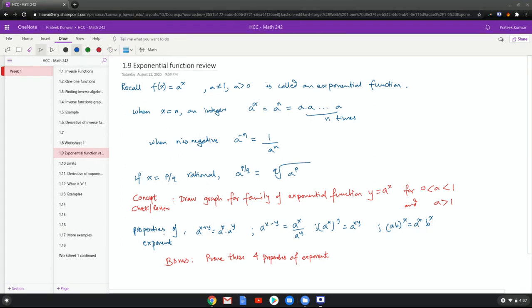There are some basic properties of exponents. A to the power x plus y is a to the x times a to the y. A to the x minus y is a to the x divided by a to the y. A to the x whole raised to y is a to the xy. And ab to the x is ax to the bx.